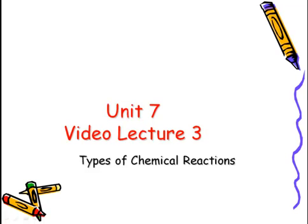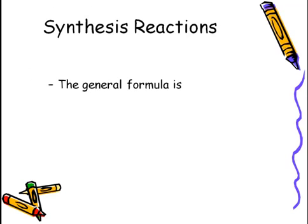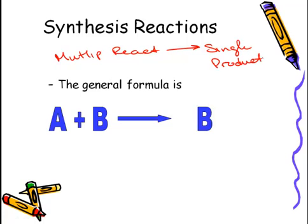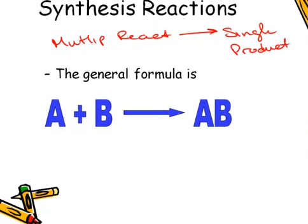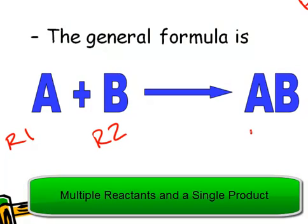Unit 7, Video Lecture 3: Types of Chemical Reactions. Here we're going to talk about five major types of chemical reactions. The first is a synthesis reaction. A synthesis reaction occurs where we have multiple reactants forming a single product. Our general formula is A plus B yields AB. We have reactant 1, reactant 2, but only one product.